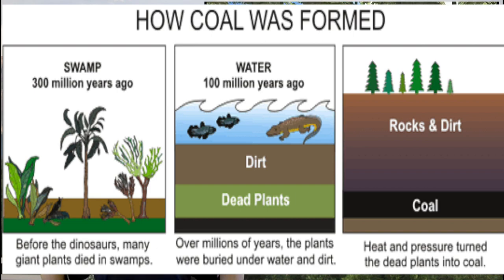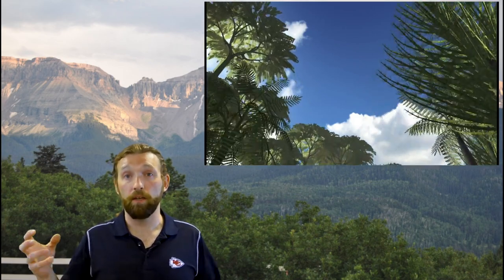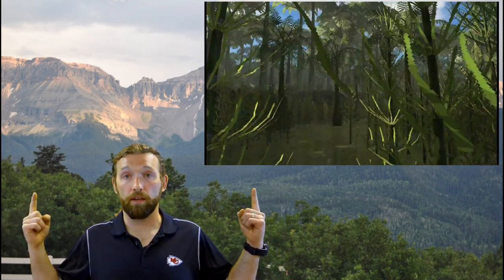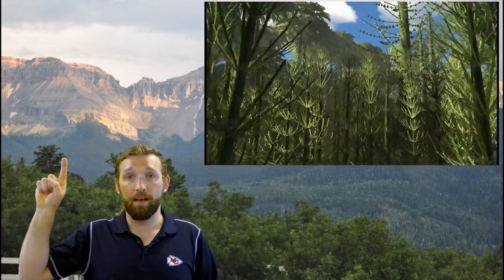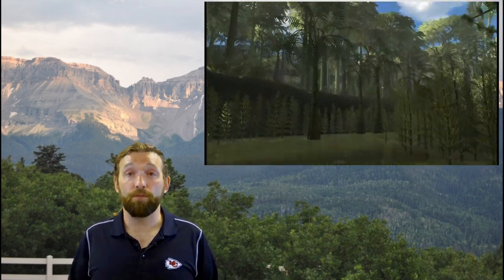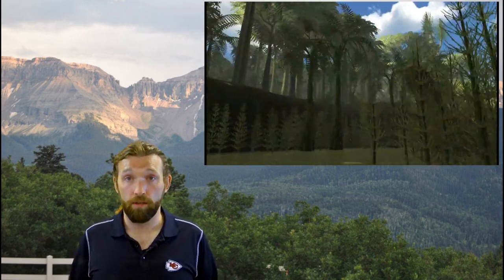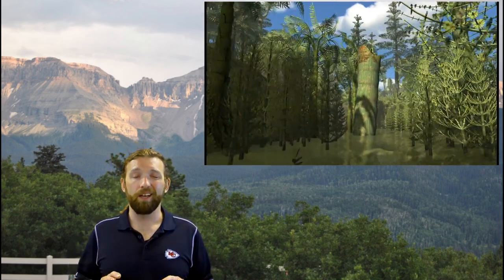Most of our coal deposits, especially here in the United States, came exactly from this time period. So if you have a piece of coal burning in a power plant, chances are it's 350 million years old. You are taking carbon that was pulled from the atmosphere then, locked up in the body of those trees, and now burning it and putting it back into the atmosphere. That carbon hasn't been in the atmosphere for 300 million years — pretty crazy.